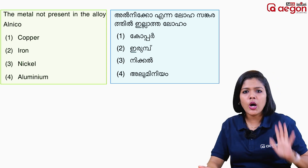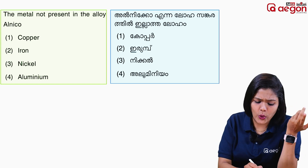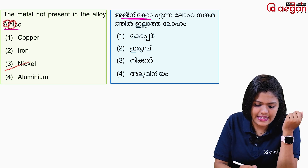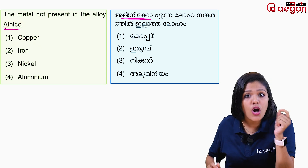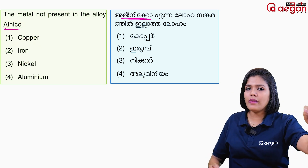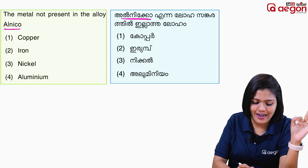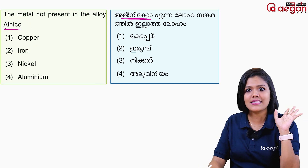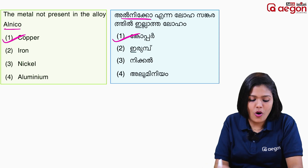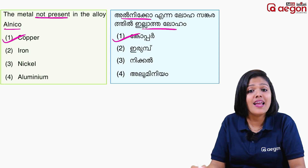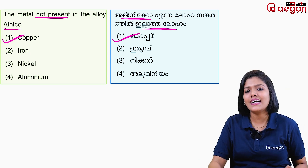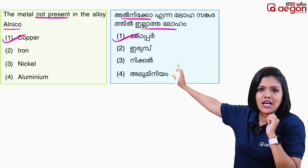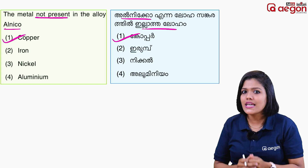Next question: which metal is not present in the alloy? The options include aluminium, nickel, copper, cobalt, and iron. The metal that is not present in the alloy is aluminium. The alloy uses copper, iron, nickel, and cobalt, and is used as a magnetic material.